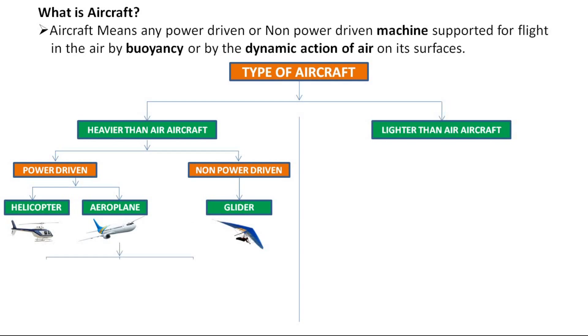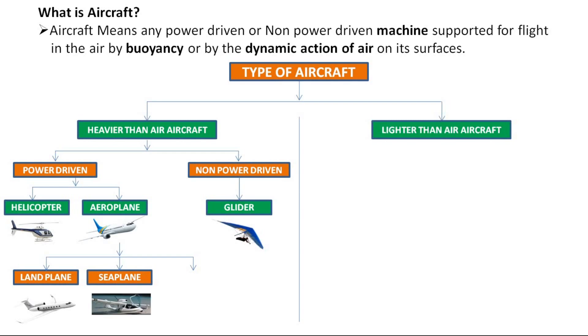Aeroplane is again divided into three types: land plane, sea plane, and amphibian plane.